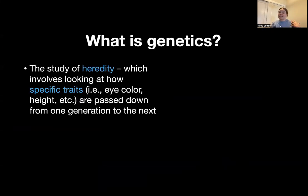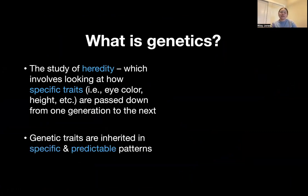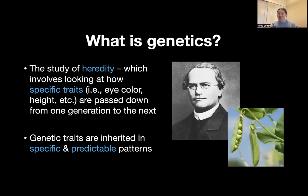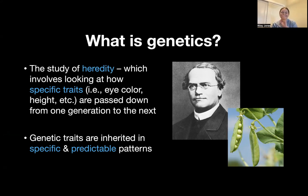What really is genetics? Genetics is the study of heredity, which involves specific traits. This could be eye color, hair color, height, or skin color — all passed down from one generation to the next. These genetic traits are inherited in specific and very predictable patterns. There has been a lot of science that has studied how these traits are being passed down. Of course, this is Gregor Mendel, and he studied these from his very famous study with pea plants, looking at color, whether or not the peas were wrinkled, what color the flowers were. I'm sure you've all heard about it — that's where Mendelian genetics all came from.